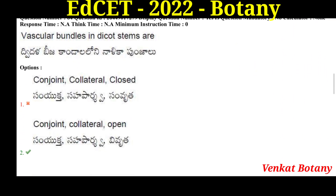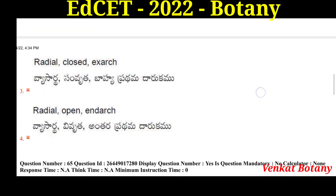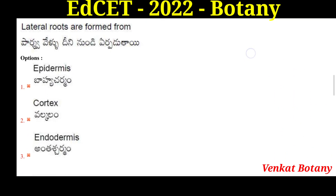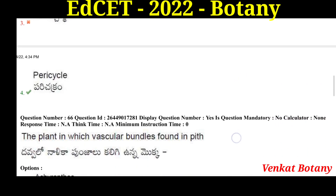Vascular bundles in dicot stem are conjoint, collateral, and open (vascular bundles with cambium). The origin of lateral roots is from the pericycle — pericycle is the origin of lateral roots. Pericycle is the partial value for lateral root origin.